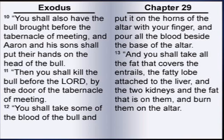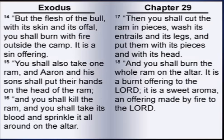And you shall take all the fat that covers the entrails, the fatty lobe attached to the liver, and the two kidneys, and the fat that is on them, and burn them on the altar. But the flesh of the bull, with its skin and its offal, you shall burn with fire outside the camp. It is a sin offering.